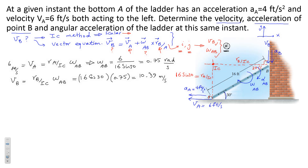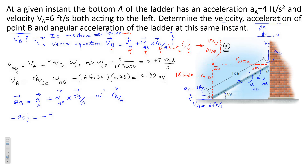The next part is finding the acceleration of point B. The acceleration of point B can be found from the relative acceleration equation: it equals acceleration of A plus alpha_AB cross R_B/A minus omega² times R_B/A. We need to plug everything in vector form. The acceleration of point B is in the negative j direction — it is downward — so we have minus aB·j equals acceleration of A to the left, so minus 4i.